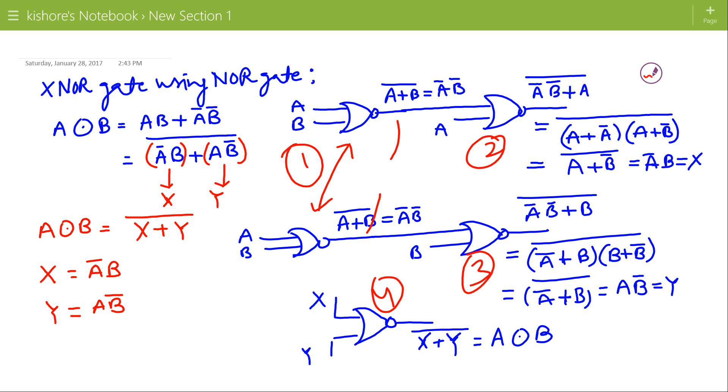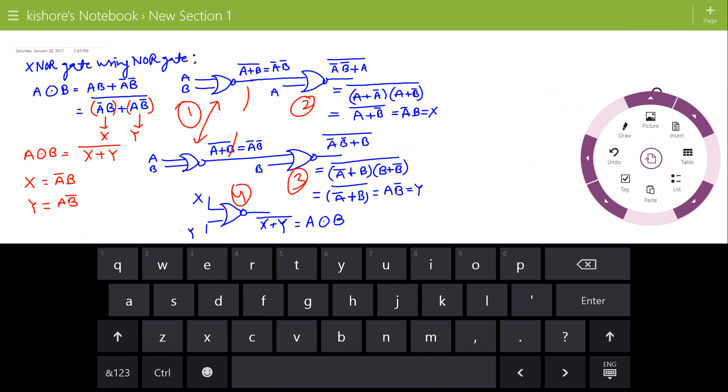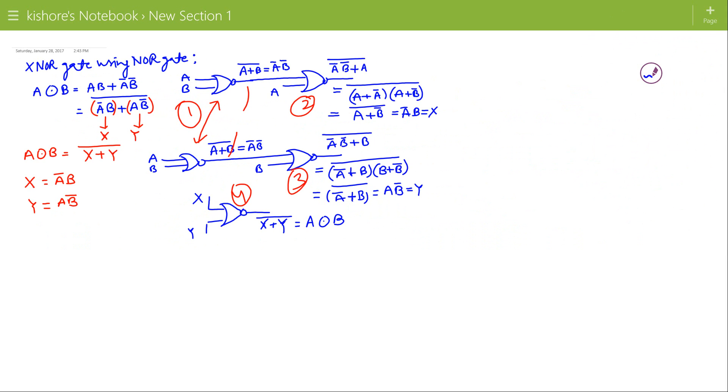Total four NOR gates are required to realize exclusive NOR gate, and the resulting circuit will be first A NOR B, and then two more NOR gates. This will give X and Y, and X and Y will go to the input to the fourth NOR gate.